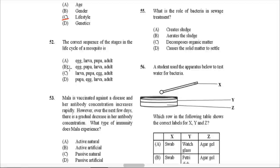Question 52: The correct sequence of the stages in the life cycle of a mosquito is A — egg, then larva, then pupa, then the final stage the adult.